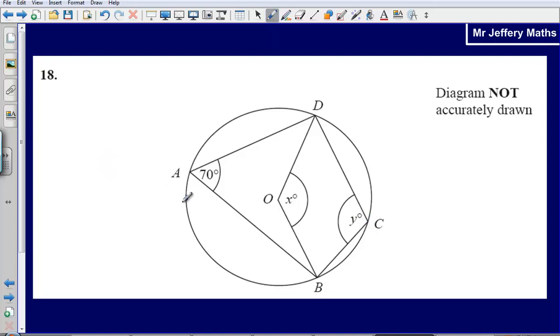So the first thing to do is we want to find out what x is going to be. So what would x be? And that's quite simple. X is going to be 70 multiplied by 2, which is 140 degrees.